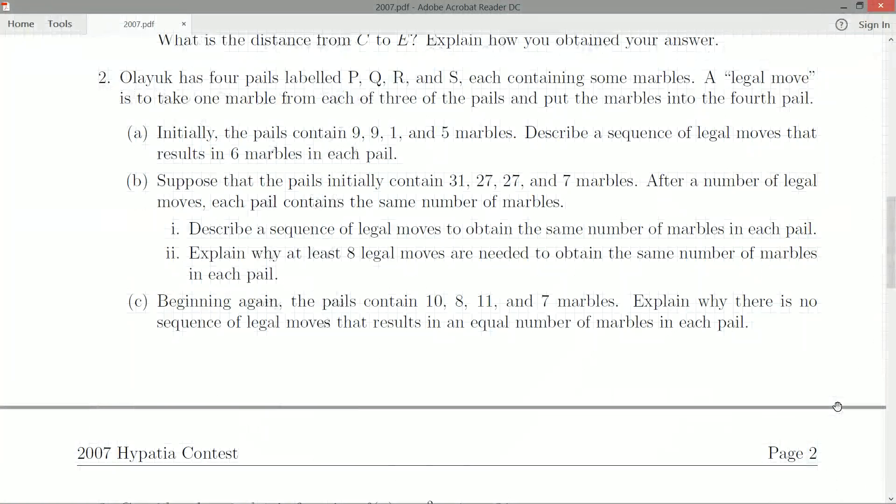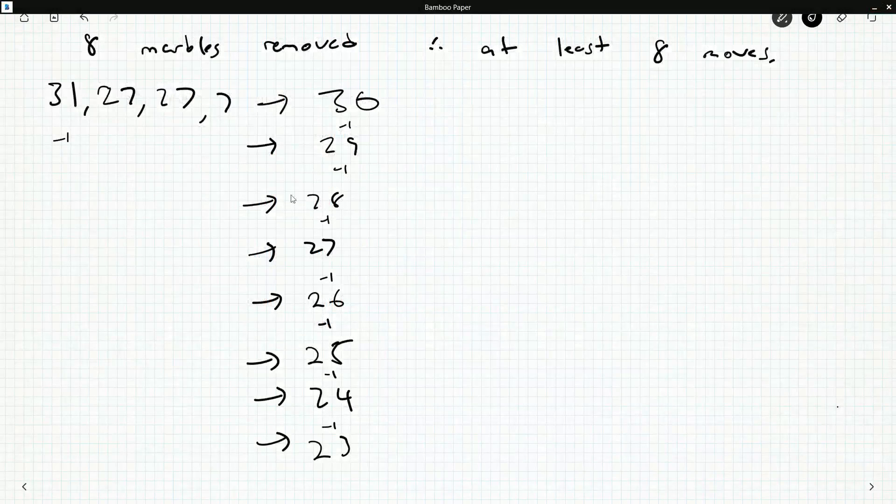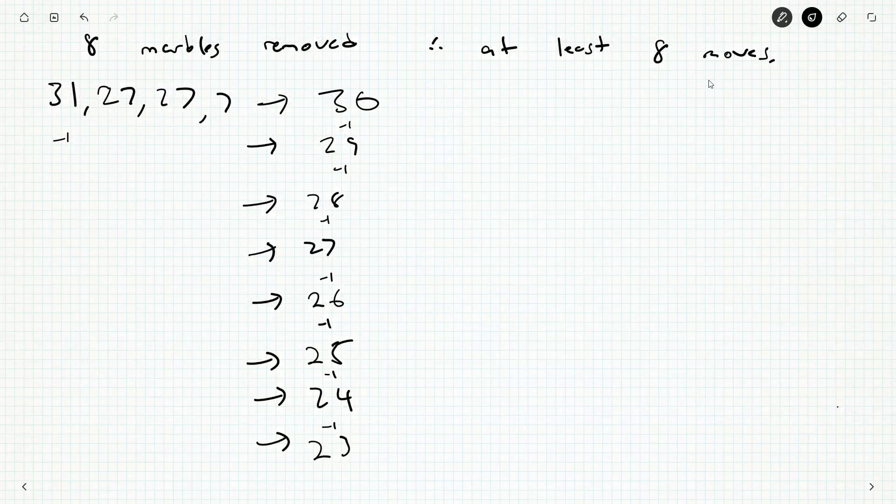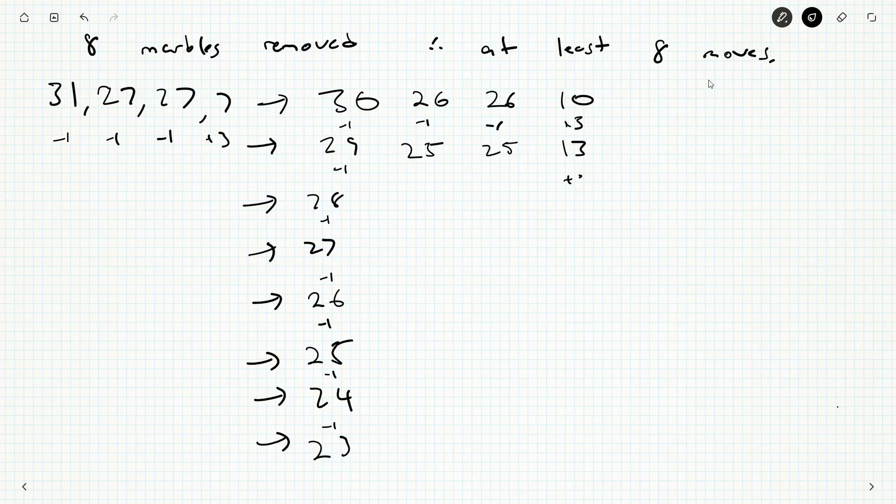They didn't say our legal moves has to be eight. But we do know at least eight. I'm going to get this seven up real quick. So we'll get 26, 26, 10. 25, 25, and 13. 24, 24, 16. 23, 23, 23, 19.